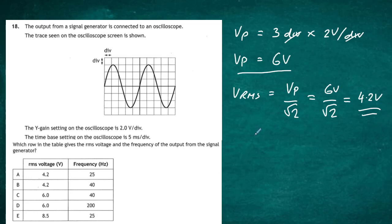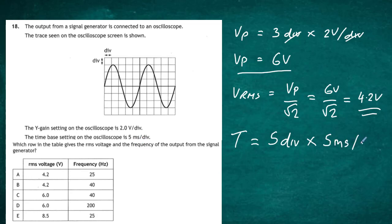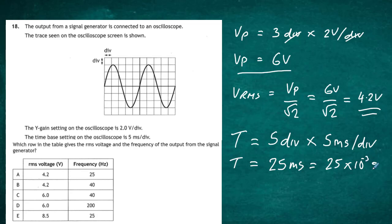For the frequency, we first work out the period by counting how many divisions one complete wave cycle covers. One complete up and one complete down covers 5 divisions. Multiplying 5 divisions by the time-base of 5 milliseconds per division gives a period T of 25 milliseconds, which equals 25 times 10 to the minus 3 seconds.